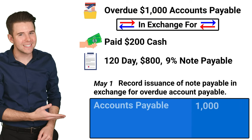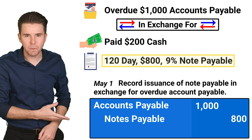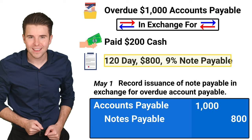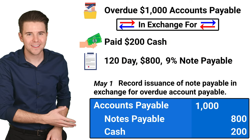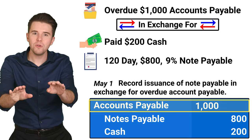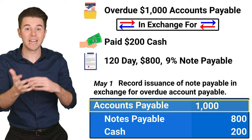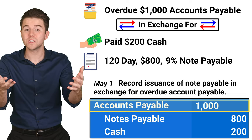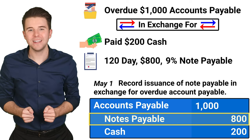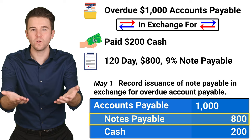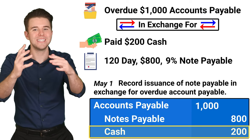To record this entry, we debit accounts payable for $1,000, credit notes payable for $800, and credit cash for $200. We debited accounts payable to remove that liability account as we have now paid some cash and converted the rest to a notes payable. We credited notes payable as we now owe $800 in the form of a notes payable, and we credited cash to reduce that asset account.